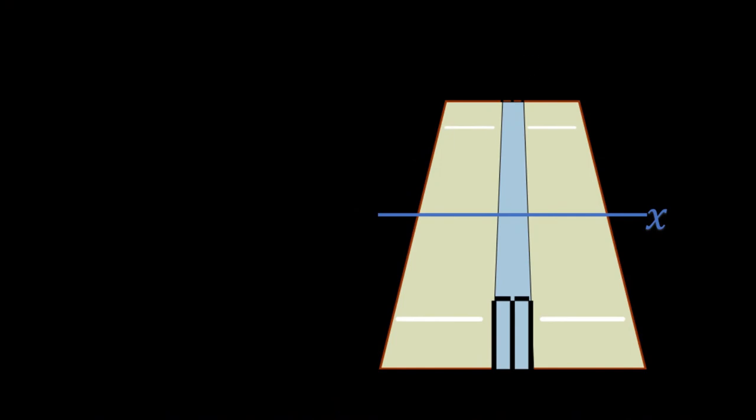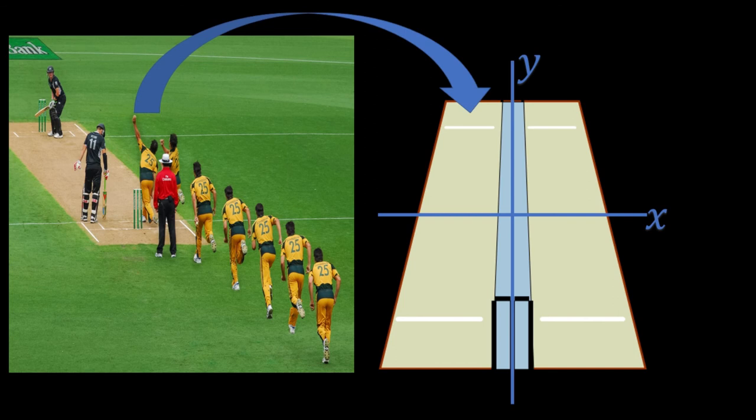Consider a cricket pitch and let us set axes for reference. These are x-axis and y-axis. Now assume that a left-handed bowler is bowling over the wicket. In order to get a wicket, he would target the present origin of x and y-axis.